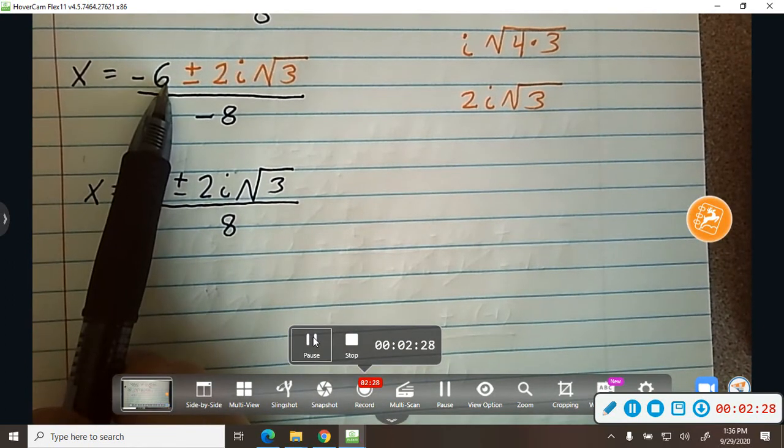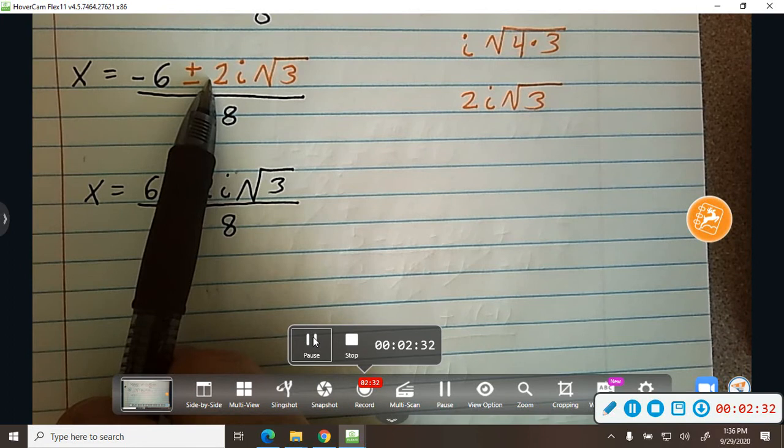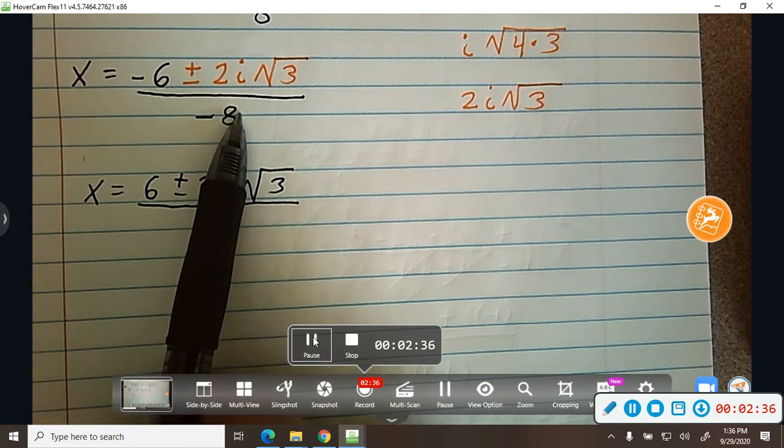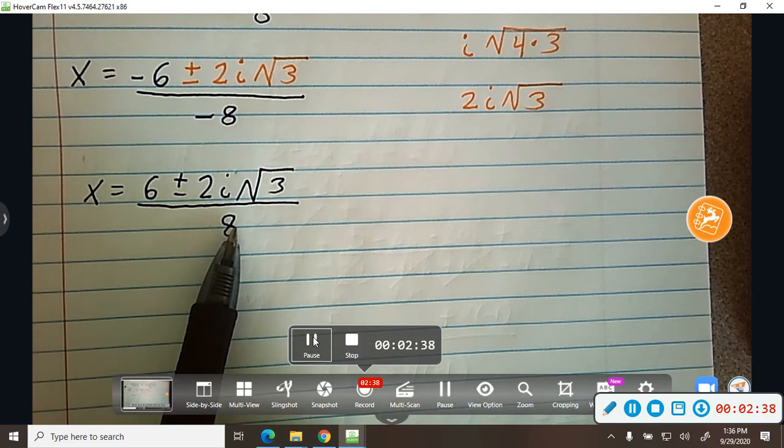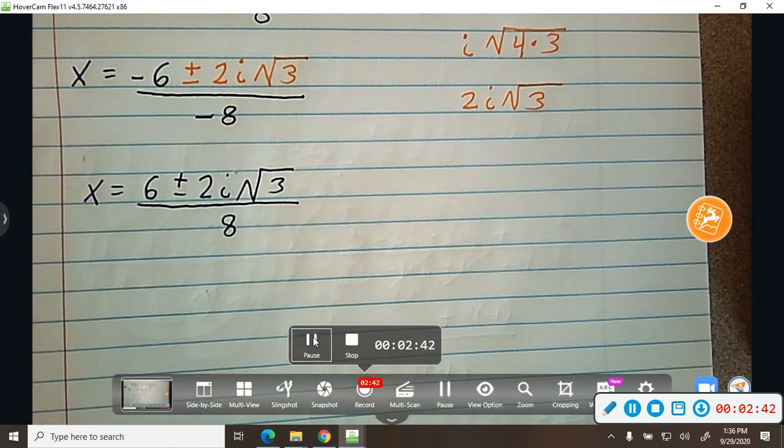So I divided negative 6 by negative 1. I divided plus negative by negative 1, which stays plus. And then I took negative 8 divided by negative 1. So any time you have a negative in the denominator, that's what I would do.